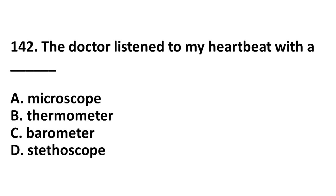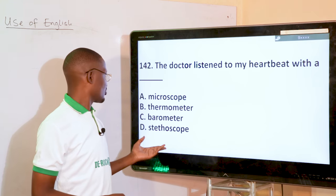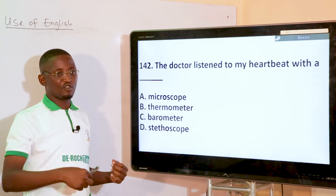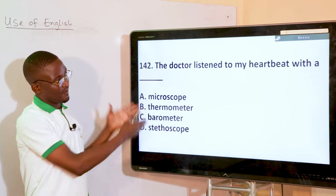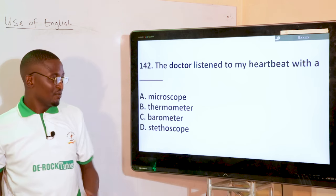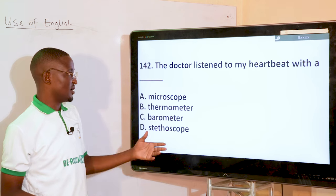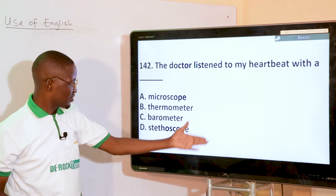The doctor listened to my heartbeat with a dash. What should a doctor use to listen to the heartbeat? That is the stethoscope — not a microscope, not a meter, not a barometer. In English, you should have at least residual knowledge about different fields, because these kinds of questions are not limited to scientists. You need knowledge about different aspects and their functions.